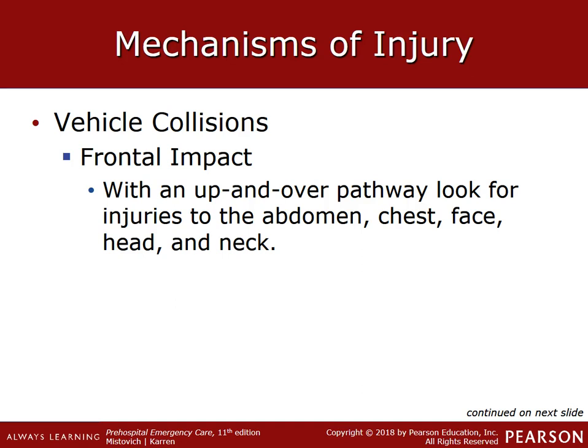As the chest hits the dashboard or steering wheel, bones and soft tissue are both affected. The ribs and sternum can break, and the cartilage connecting the ribs to the sternum can separate. A torn intercostal artery can bleed 50 milliliters per minute into the chest cavity with no blood seen externally. The heart suffers two forces: compression and shearing. Compression occurs when the heart is caught between the sternum and spine, bruising the heart muscle. The heart is suspended by the aorta, attached posteriorly at the arch by a ligament, and the shear force can tear or transect the aorta.